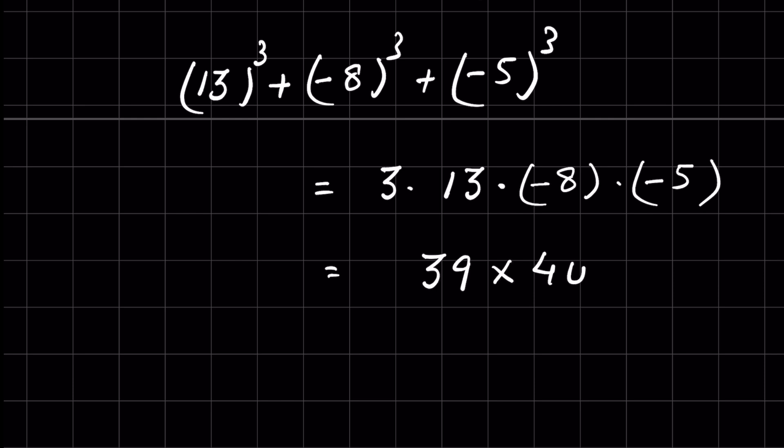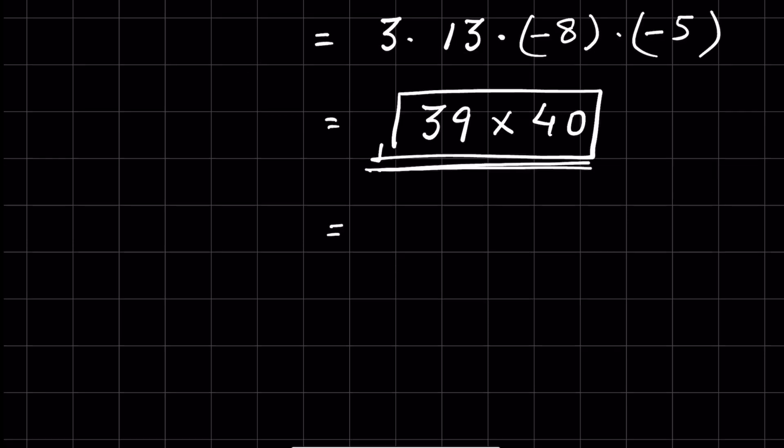So 39 × 40, the answer will be 39 × 40. Now we can easily multiply 39 × 40 without using a calculator: it is 1560. Did you like this method? Let me know in the comment section. Thanks for watching.